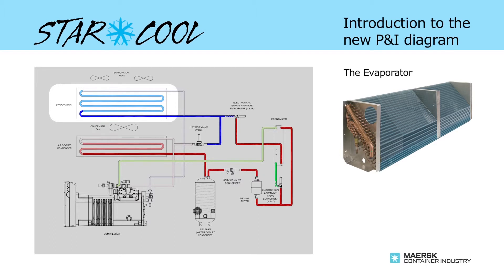Located below the evaporator are the six heaters. These have a capacity of 750 watts each and are in use during defrost. They are also activated when the cargo setpoint temperature is higher than the control temperature, and during dehumidification.